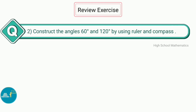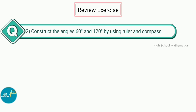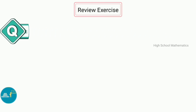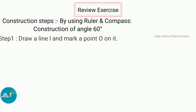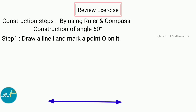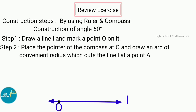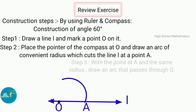Question number 2: Construct angles of 60 degrees and 120 degrees using ruler and compass. Construction of 60 degrees: Step 1 — draw a line L and mark a point O on it. Step 2 — place the pointer of the compass at O and draw an arc of convenient radius which cuts the line L at a point A.